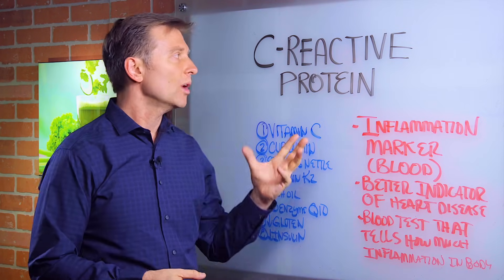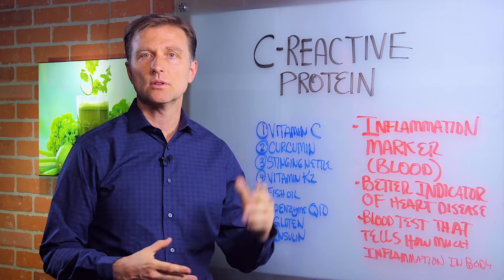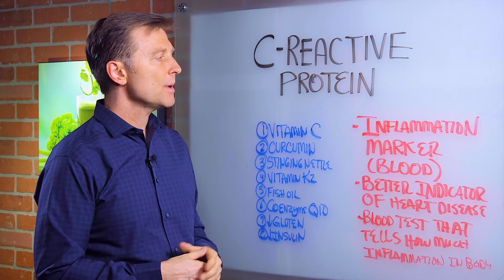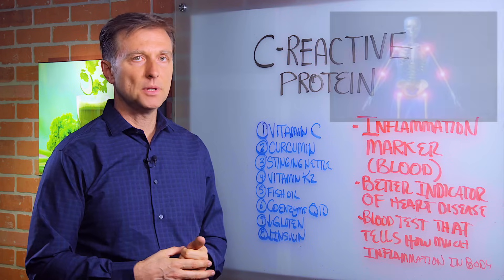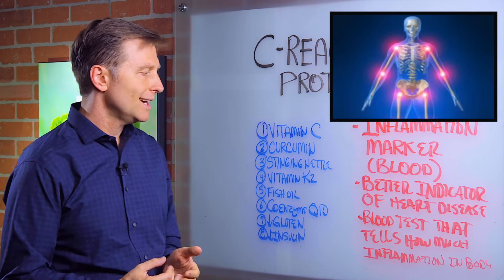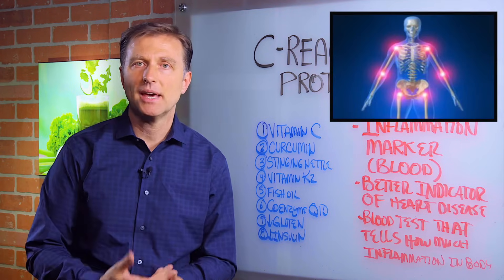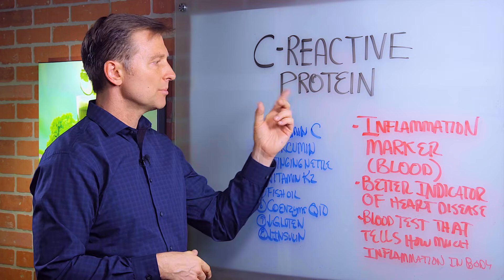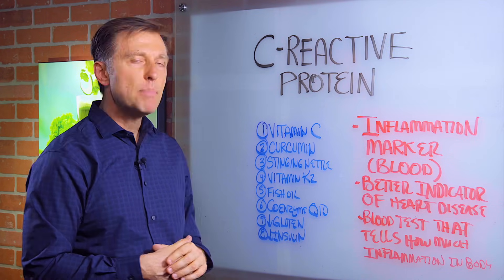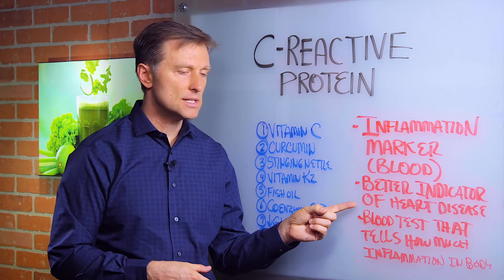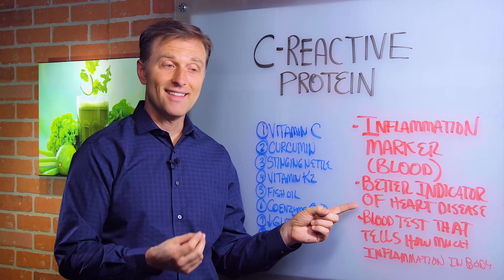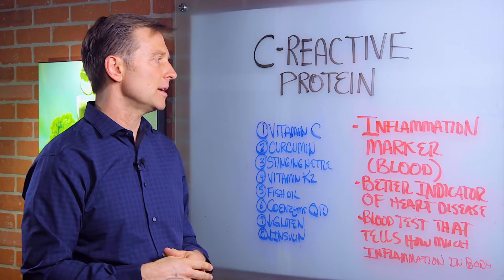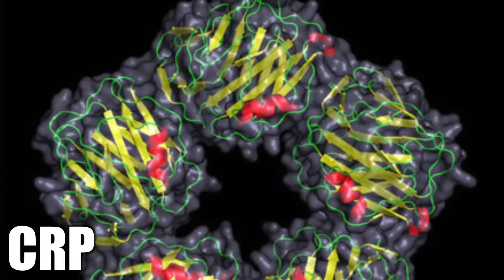Hi guys. Recently I got a question: what is C-reactive protein? So I'm going to do a little video on that, exactly what to do about it and what causes it. It's basically an inflammatory marker in the blood — a test you can do to see how much inflammation is in the body. It's a protein that indicates that, and it's a better indicator of heart disease and vascular disease than cholesterol, because inflammation is a better indicator of the whole process.